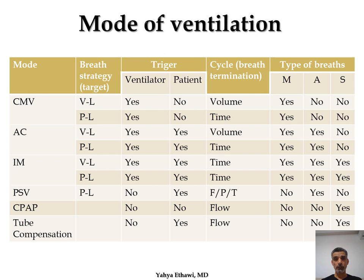Here is a comparison between different modes. In CMV the strategy can be volume-limited or pressure-limited, the ventilator triggers, and the patient is not helping in either. In volume-limited, the volume is used to cycle. The cycle refers to how we change from inspiration to expiration — from pause to inspiration, inspiration to pause, pause to expiration, and so on. In CMV, cycling depends on volume or time: you tell the ventilator to give inflation for a set time, then pause, then exhalation.